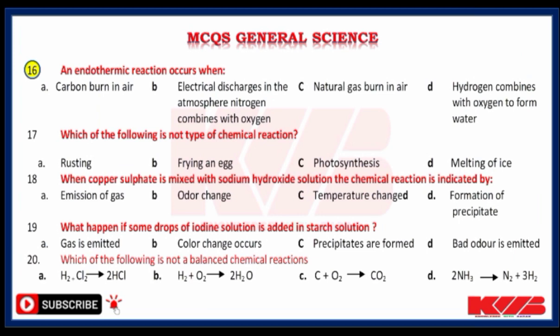An endothermic reaction occurs when: carbon burns in air, electrical discharge in the atmosphere with nitrogen combining with oxygen, natural gas burns in air, or hydrogen combines with oxygen to form water? Yes, electrical discharge in the atmosphere — nitrogen combines with oxygen. Which one of the following is not a type of chemical reaction? Rusting, frying an egg, photosynthesis or melting of ice? Yes, melting of ice.